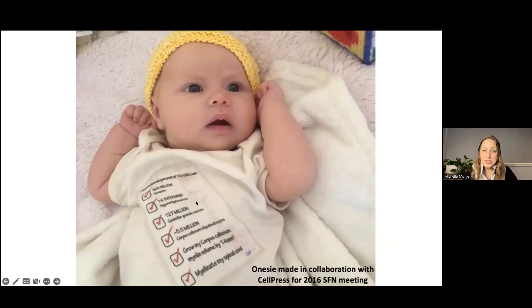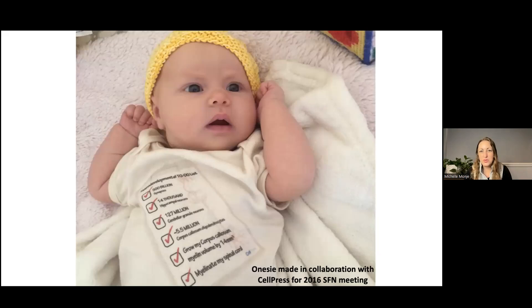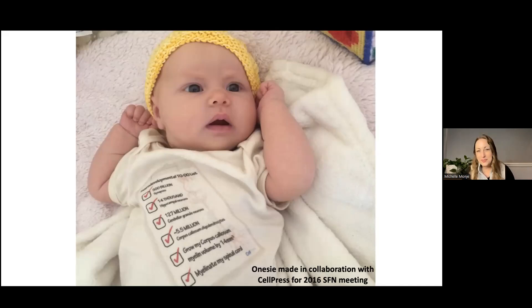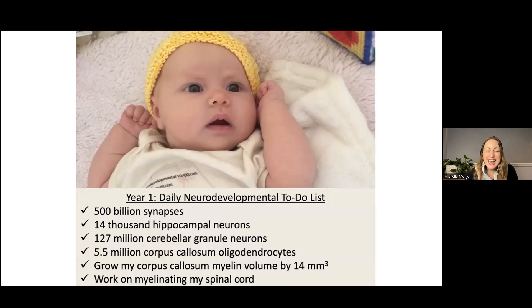Since we're focusing on neurodevelopment first, I find that the best way to do that is to show you pictures of my children. This is my daughter Sophie. When Sophie was an infant, we realized there was so much neurodevelopment that humans undergo every single day in the first year of life that we made her a checklist on a onesie. It really is astounding how much neurodevelopment human infants accomplish every single day in the first year of life.